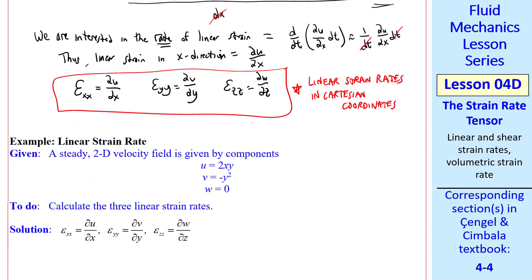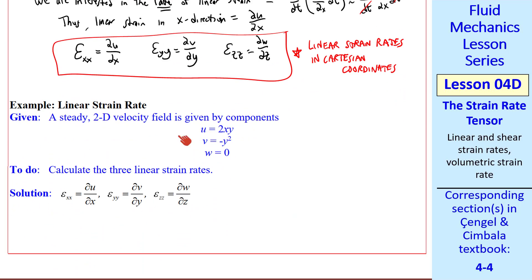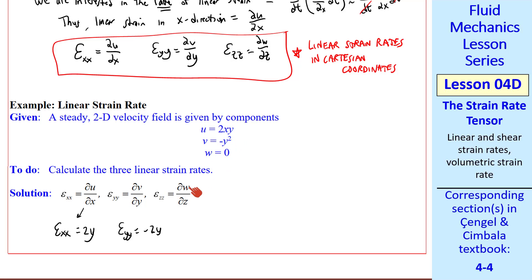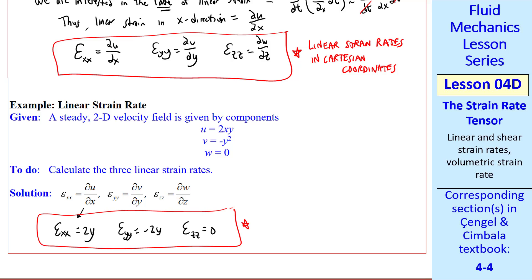Let's do a quick example. Suppose we have a steady 2D velocity field. Let's calculate the three linear strain rates. ε_xx is ∂u/∂x, which is just 2y. ε_yy is ∂v/∂y, which is negative 2y. And since w is 0, ε_zz is 0. So these are our answers.